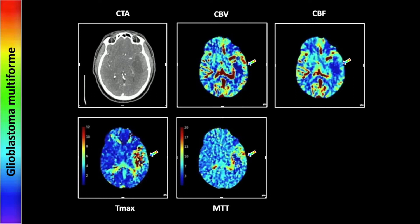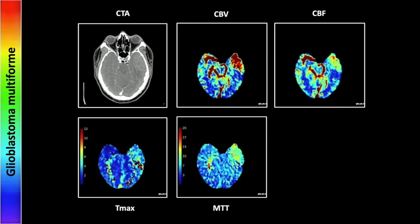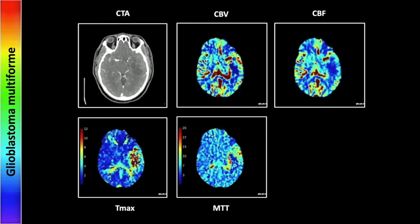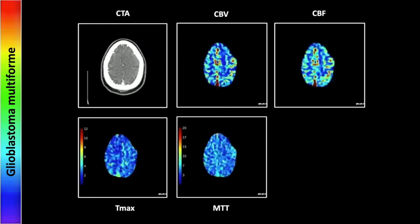Slightly higher up, as you can see on the CTA, there is actually a cystic or necrotic component as is typical with these tumors, and you can see that is showing up on the CBV and CBF with reduced perfusion. The Tmax and the MTT are of questionable value here, but they do show an abnormality in the region with an increase in the Tmax. In the videos, the CBV and CBF are increased in the solid region and decreased in the necrotic or cystic portion of the tumor.